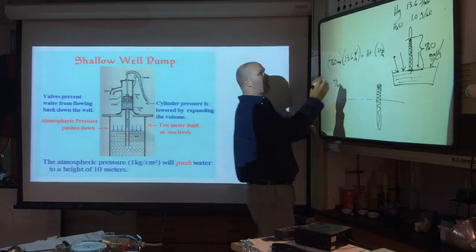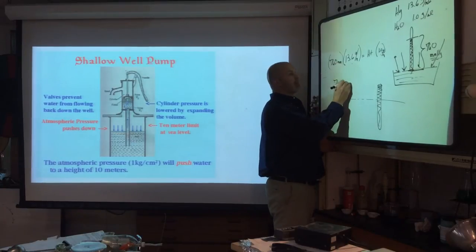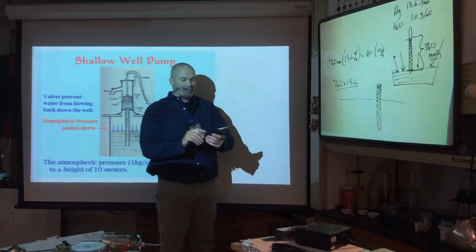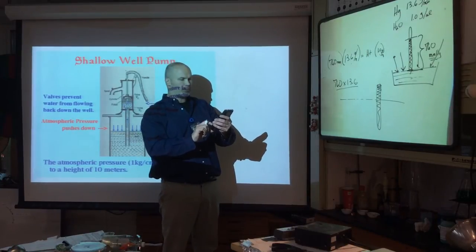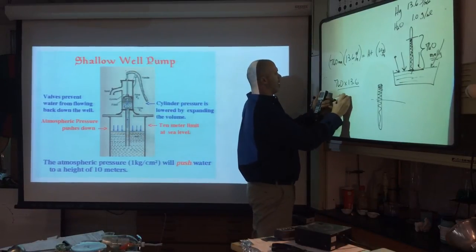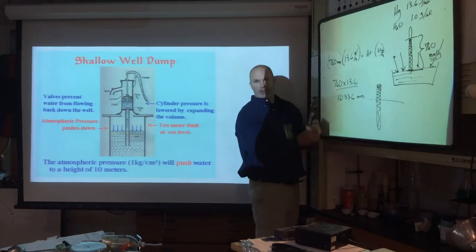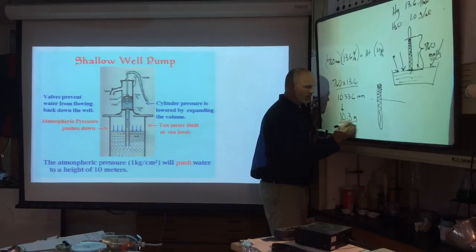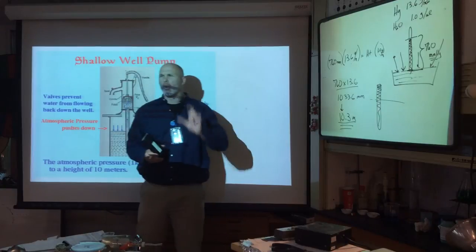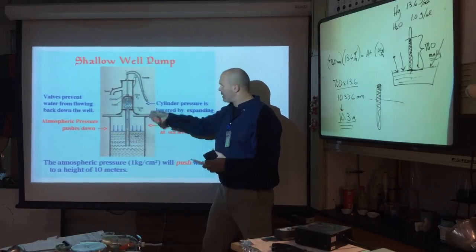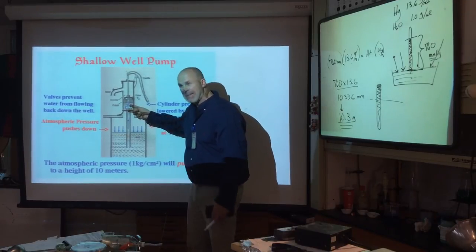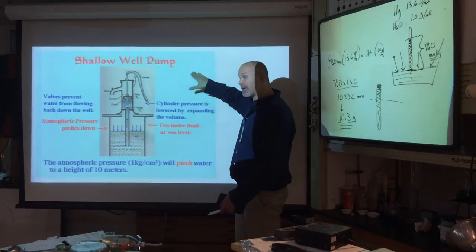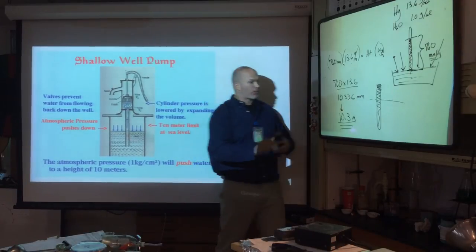10.3 meters is the limit of how high water can be supported by atmospheric pressure — approximately 32 feet. When the well was moved to higher elevation inside the castle, they went past that limit. The pump failed because they exceeded the 32-foot limit imposed by atmospheric pressure. And no, the thickness of the pipe doesn't matter — because pressure is force over area, not total force. A bigger column needs more total force, but the pressure ratio stays the same.